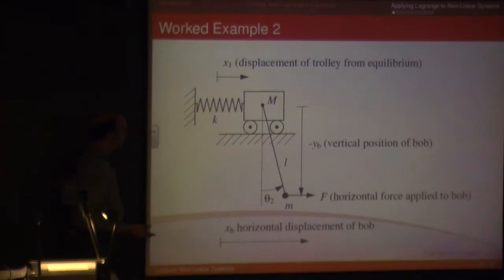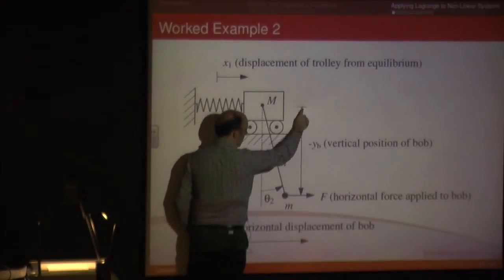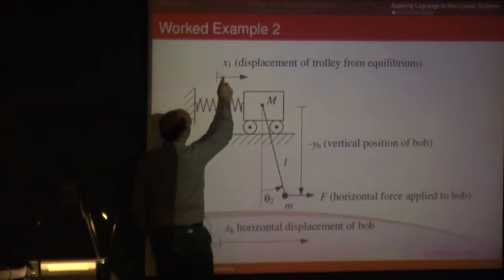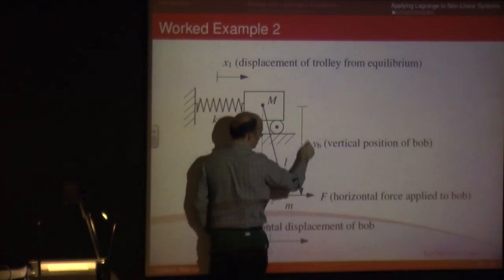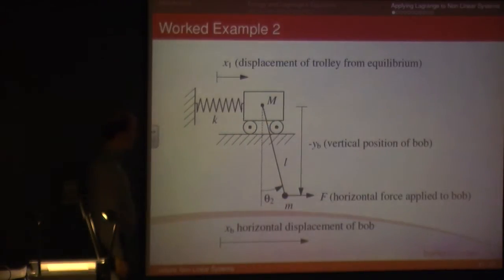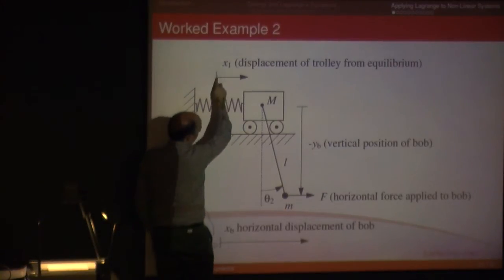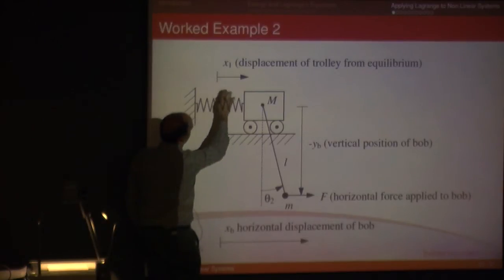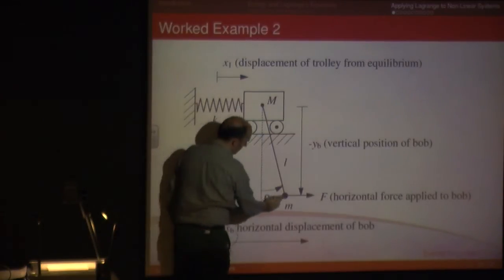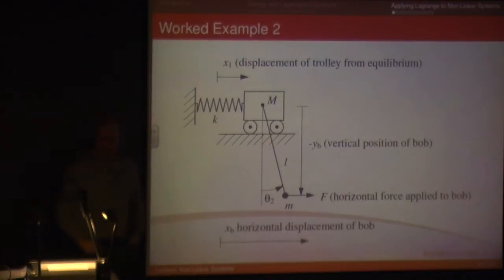Now I've set a couple of datums, I've set this is a datum in terms of the Y and this is a datum in terms of X, so Y is upwards, this is minus Y, which is minus YB. And XB is the horizontal displacement of the bob. This datum is the same as this datum. So obviously the distance is going to be X1 plus that distance there. So let's go through and sort this problem out.